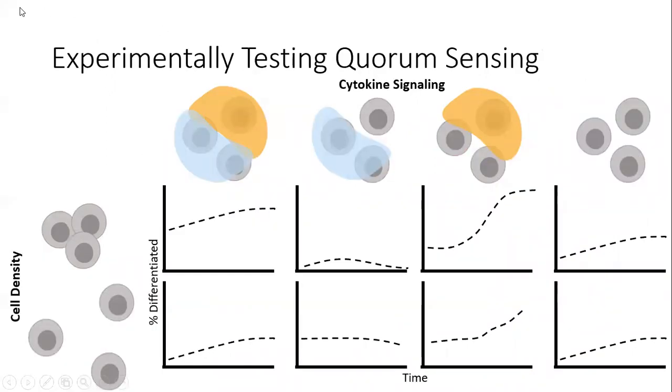Quorum sensing is the change in behavior of a group of cells as cell density changes, and it's driven by molecular signals produced by the cells. In the case of T helper cells, these secreted signals are called cytokines.